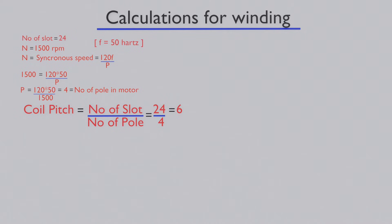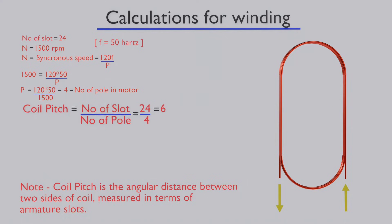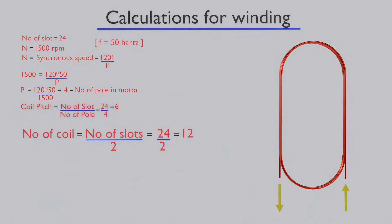Coil pitch is six for this winding. The coil pitch or coil span for winding is according to formula. It is the angular distance between two sides of a coil, measured in terms of armature slots. The number of slots is 24, so according to formula, we use 12 coils.